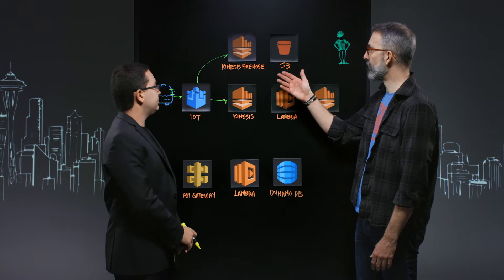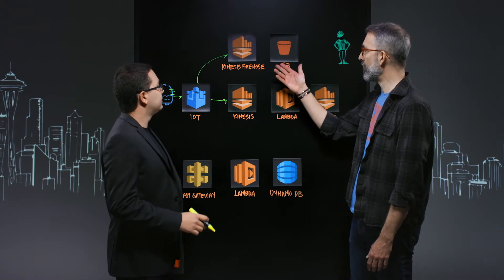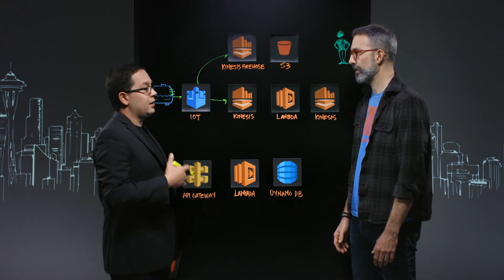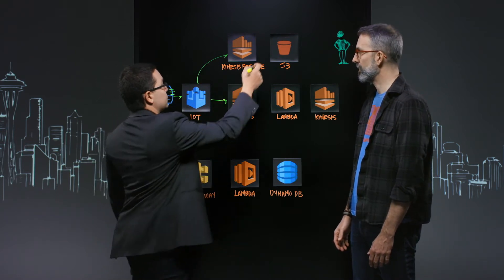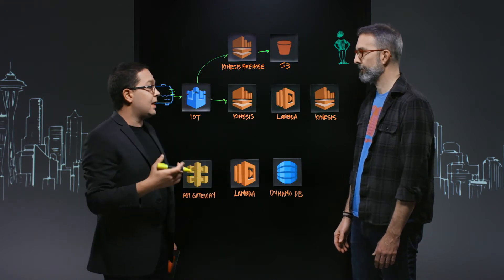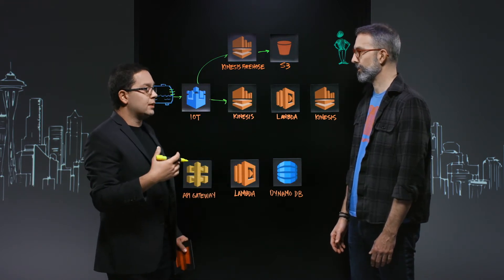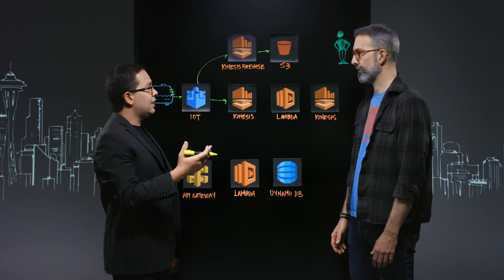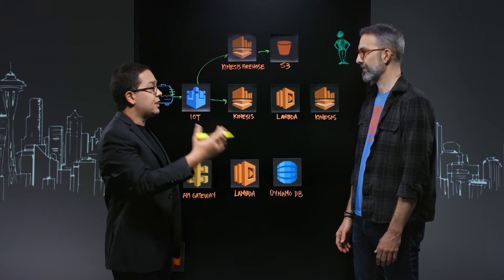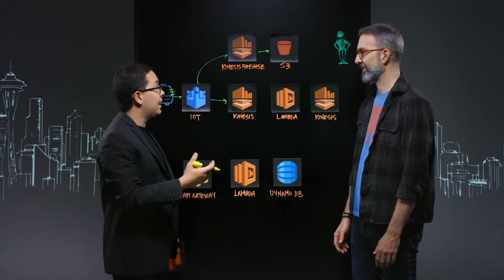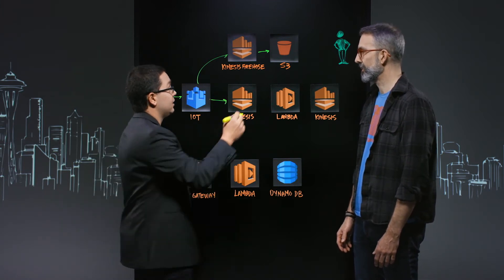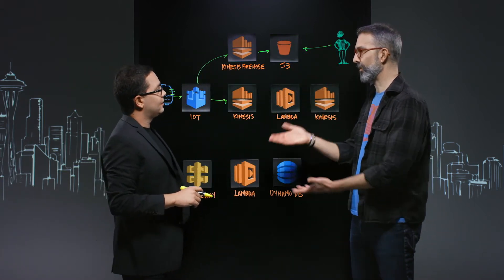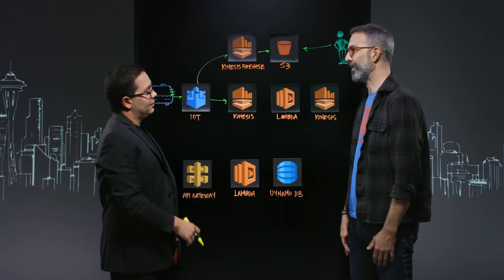The raw sensor data about how full we are and at what time goes into Firehose, which ultimately stores that data in S3. This allows our human analysts to do analysis after the fact on the time series data — how fast do these fill up, how can we predict when they're going to fill up, can we build an ML model around when they might fill up under certain circumstances? We're using S3 for cost and durability.